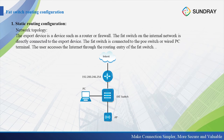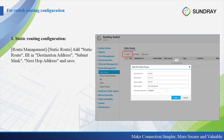The first is the static routing configuration. The network topology has the switch connected to the router, and the router connected to the internet. The PC connects to the switch. We go to the web interface of the switch, and in the route management, we can see the static route. We can add the static route here by inputting the destination IP address, the subnet mask, and the next hop IP address.